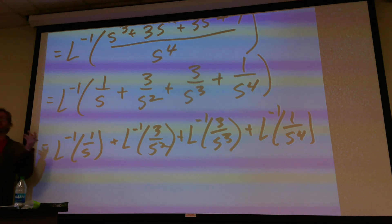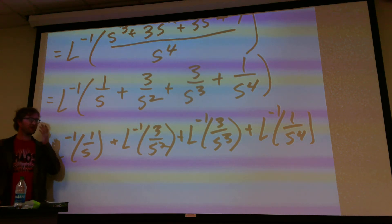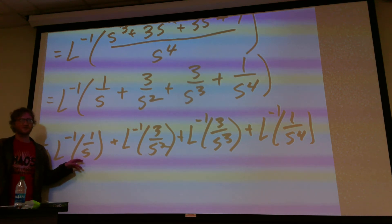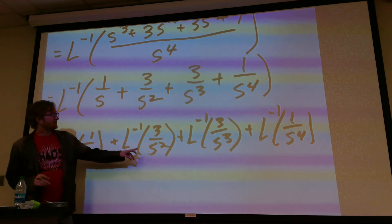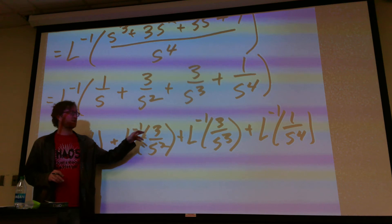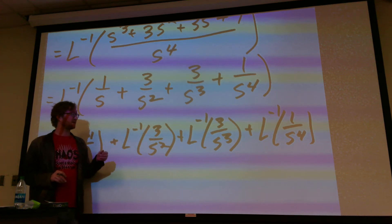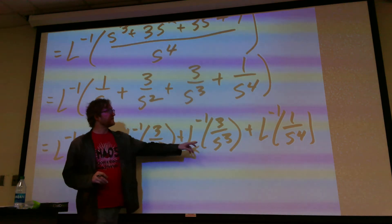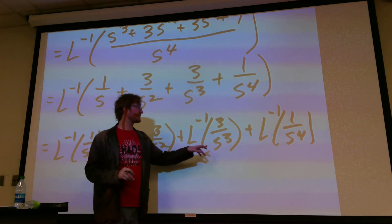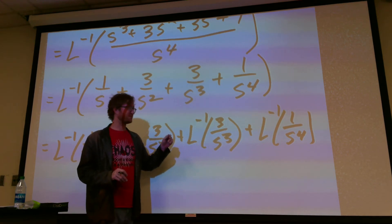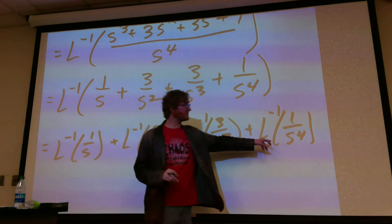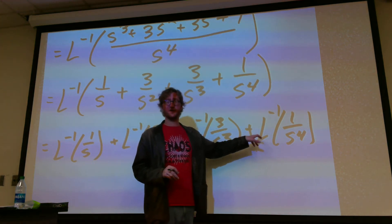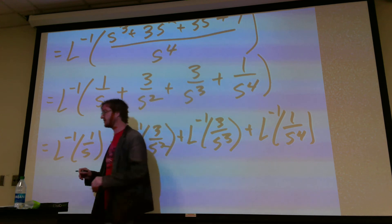Now let's break into individual pieces: L inverse of 1 over s, plus L inverse of 3 over s squared, plus L inverse of 3 over s cubed, plus L inverse of 1 over s to the fourth. We want to turn these back into polynomials. This first one turns into 1. The second needs a 1 factorial, so we pull the 3 out. The third should have a 2 factorial, so we pull the 3 out and insert a 2 factorial. The last one needs a 3 factorial, so we multiply by 3 factorial divided by 3 factorial.